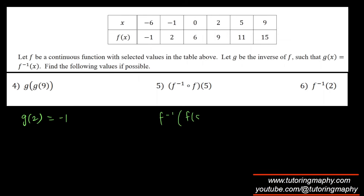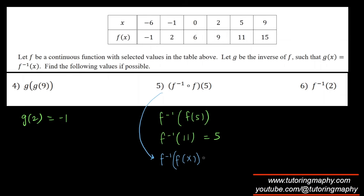For f⁻¹(f(5)): f(5) is straightforward — x = 5 gives y = 11, so this becomes f⁻¹(11). f⁻¹(11) means look for y = 11 and the corresponding x is 5. This illustrates the property that f⁻¹(f(x)) = x, so you could have written 5 immediately, but it's good to see the work.